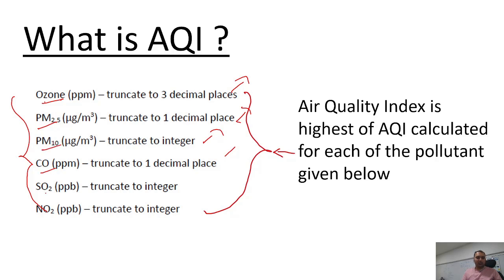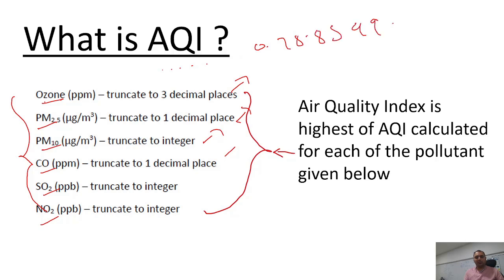Similarly PM 10, carbon monoxide, SO2, and NO2 — these are the pollutants and their values are calculated using sensors. Sensors will generally give you data in very long decimals, for example 0.7858999, but you have to truncate those values. These are the rules given in order to use the formula.